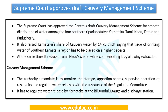The Supreme Court has approved the draft Kaveri Management Scheme for distribution of Kaveri water among four southern riparian states: Karnataka, Tamil Nadu, Kerala, and Puducherry. This broad scheme has recently received judicial approval and governs water sharing among these states.